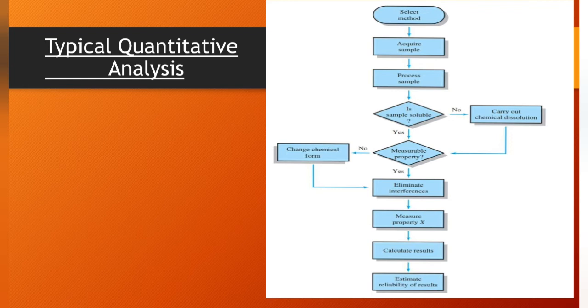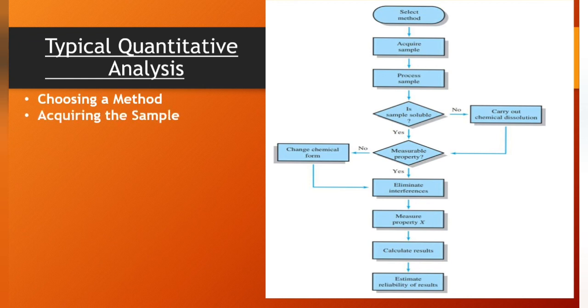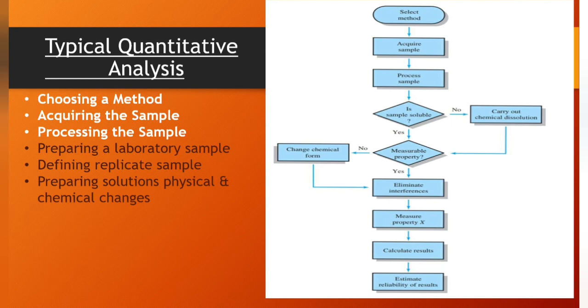Choosing a method, acquiring the sample, processing the sample. There are three sub-steps when processing the sample: preparing a laboratory sample, defining replicate samples, preparing solution, and physical and chemical changes.